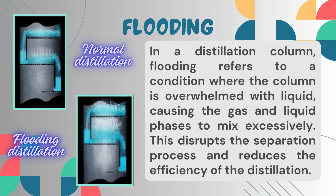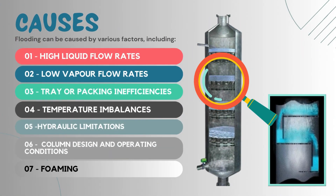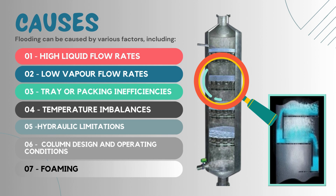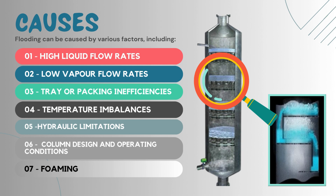Now we will look at the causes which lead to flooding in a distillation column. The first factor is high liquid flow rates. When the liquid flow rate entering the column exceeds the capacity of the column or the vapor rate, flooding occurs. This can happen due to various factors such as pump malfunctioning, incorrect control settings, or process upsets.